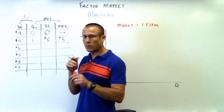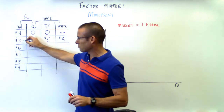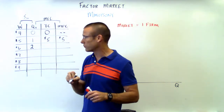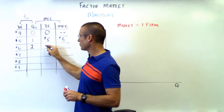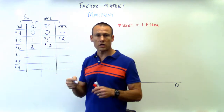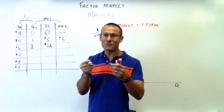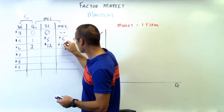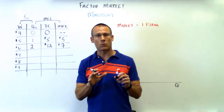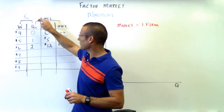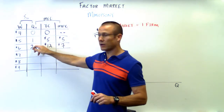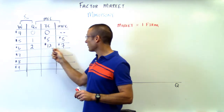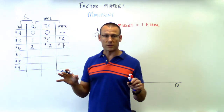If we want to hire two workers, we're going to have to raise the wage from five dollars to six dollars. That gives us two workers. Six times two is twelve dollars total cost. The marginal factor cost? We went from five to twelve, so the additional cost was seven dollars. Now we can see that the supply curve and MFC are not the same at a quantity of two: we've got a wage of six but an MFC of seven — they've split apart from each other.